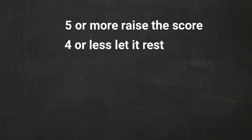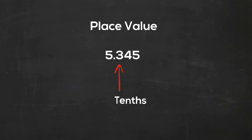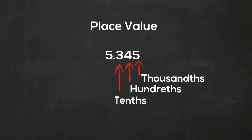Next let's review decimal place value. You have 5.345. The first number to the right of the decimal is tenths, the second number to the right is hundredths, and the third is thousandths.